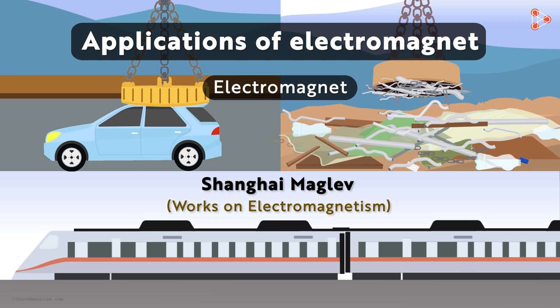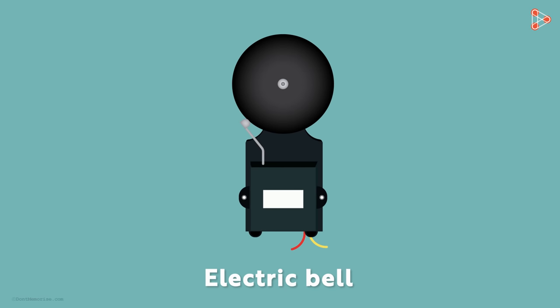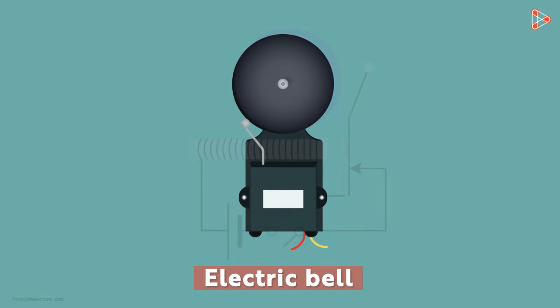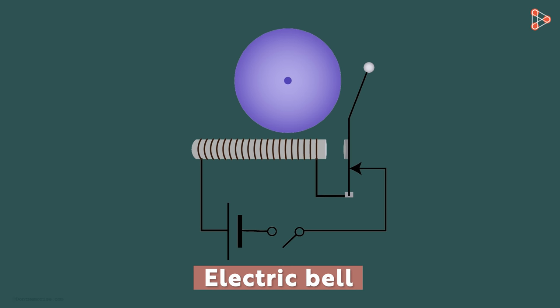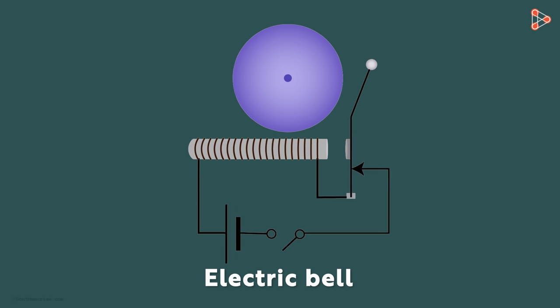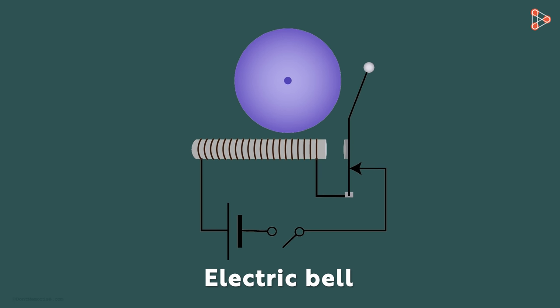Let's understand the use of electromagnets in simple devices such as electric bells. Yes, most of the bells we see nowadays are electric bells. Here is a very simplistic diagram of an electric bell. This is the inner structure of the bell. Let me first tell you the names of the basic components.